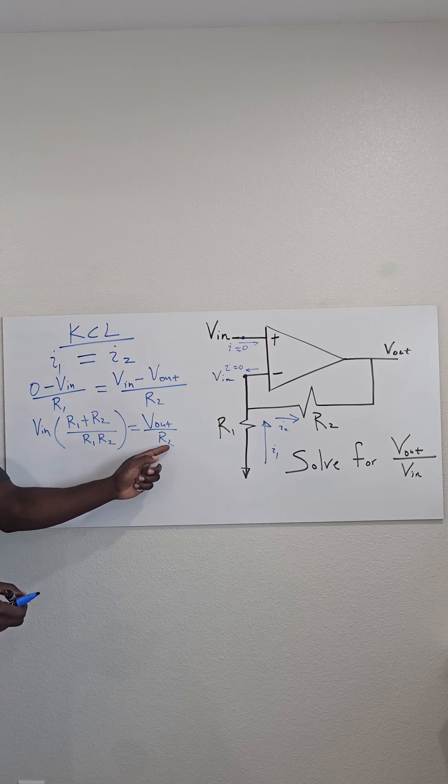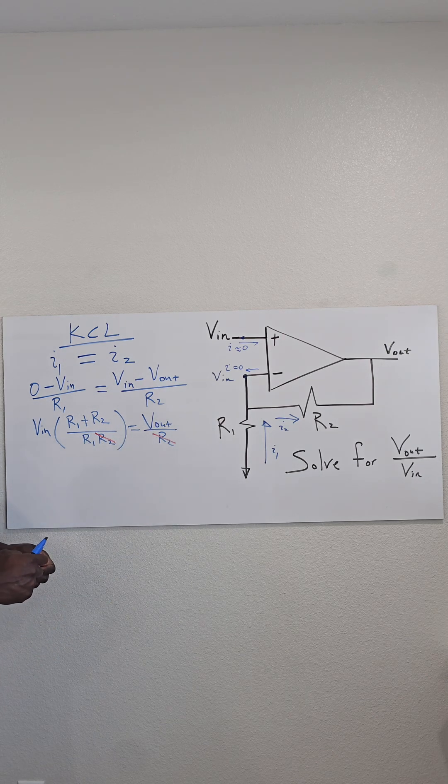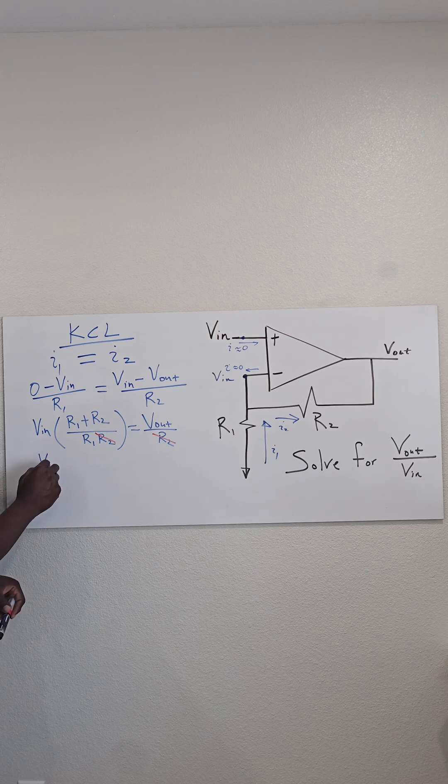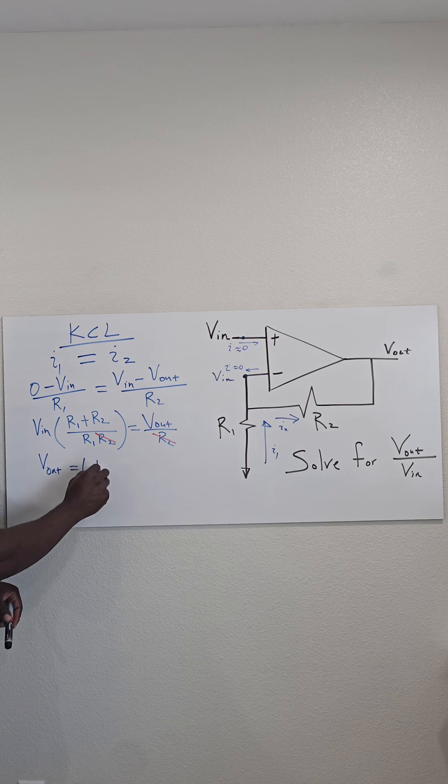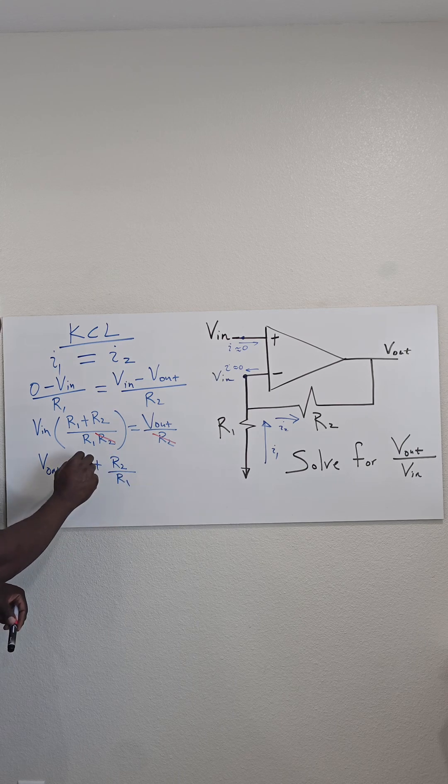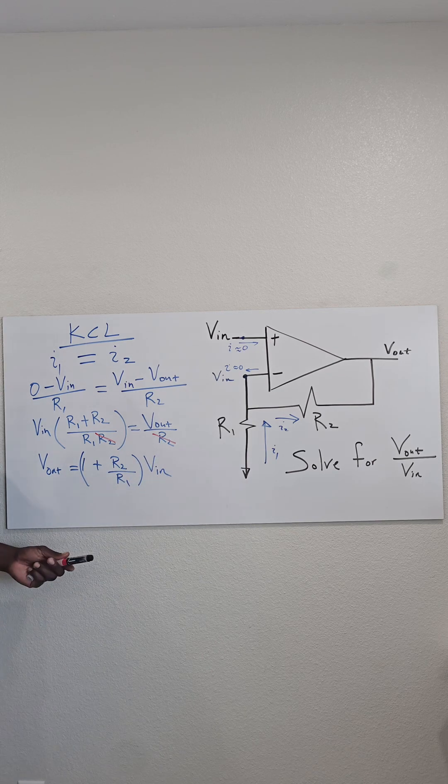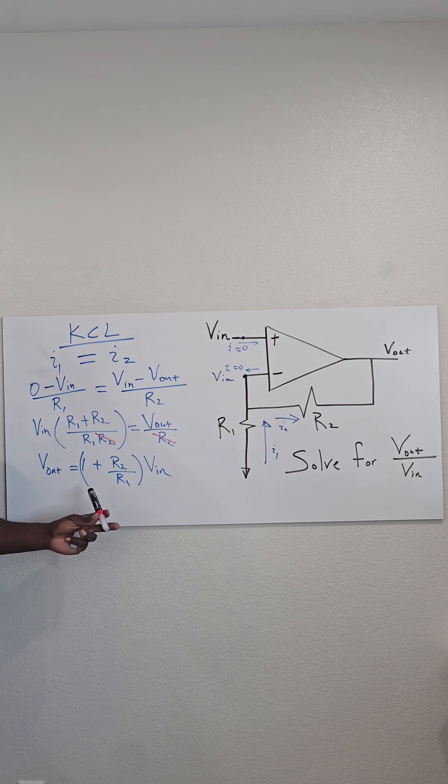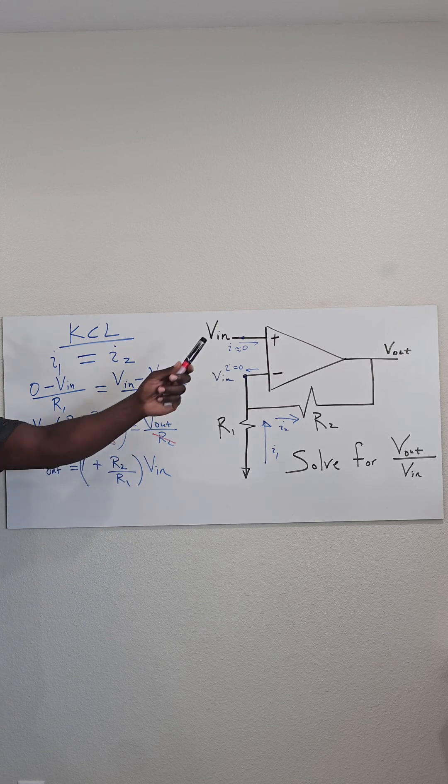And so we get our final equation as Vout equals 1 plus R2 over R1 in parentheses times Vin. And this is your non-inverting operational amplifier equation for Vout.